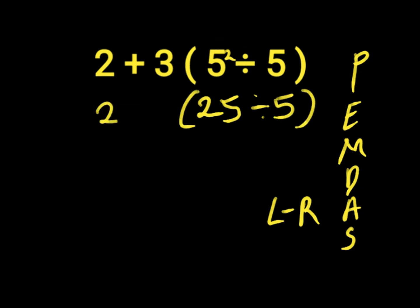Then we bring down 2 plus 3. Then 25 divided by 5 will give us 5. Then we bring our 2 plus 3 times 5.